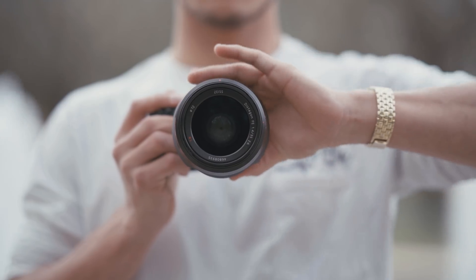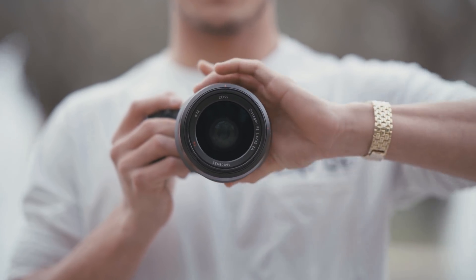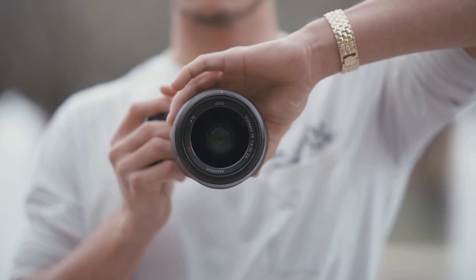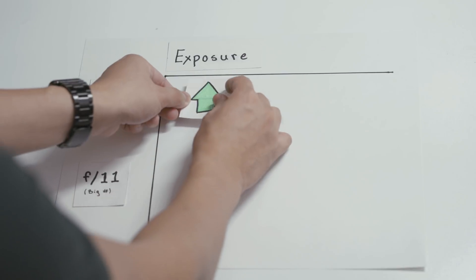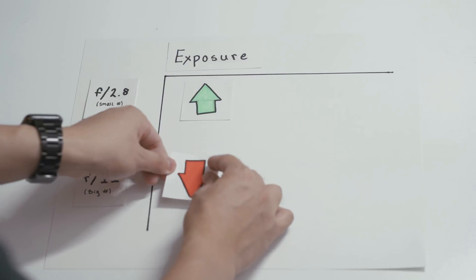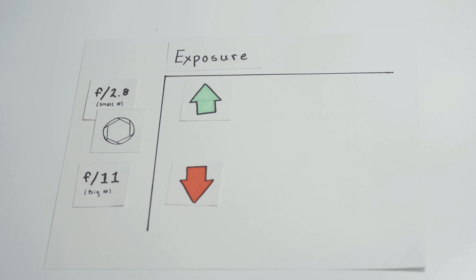All three of these settings increase or decrease the amount of light let into the camera, but they also have secondary effects. The aperture refers to the opening of the lens, or how wide open your iris is. The wider your aperture, the more light you're letting in, and the more closed down your aperture, the less light you're letting in. Aperture is measured in f-stops. The smaller your f-stop number, such as f2.8, the wider your lens is open. The larger the f-stop number, such as f11, the more closed down your aperture is.